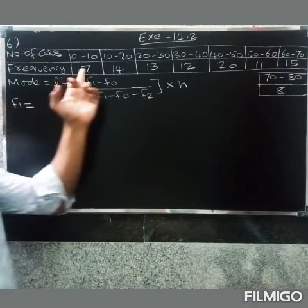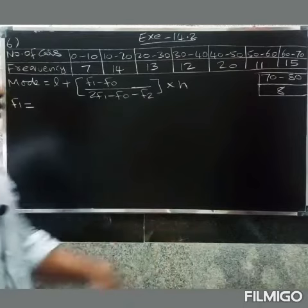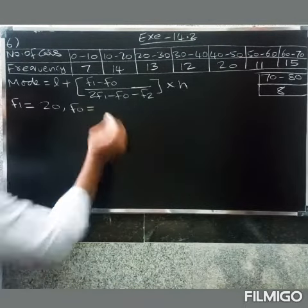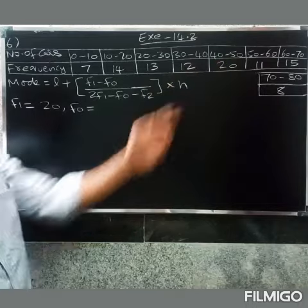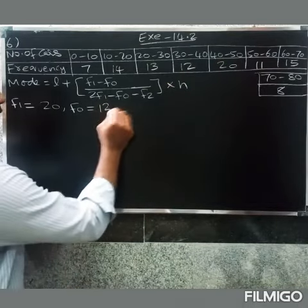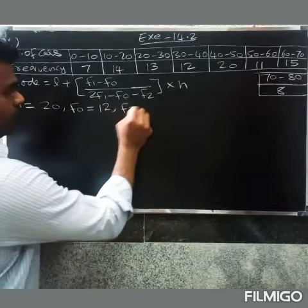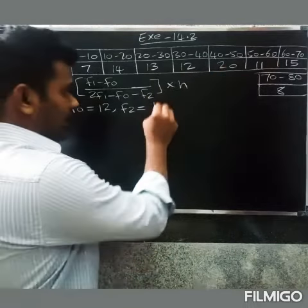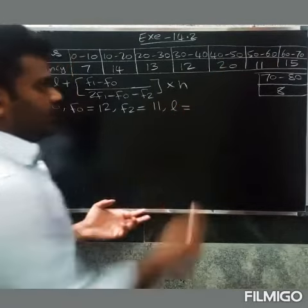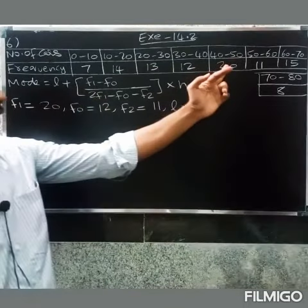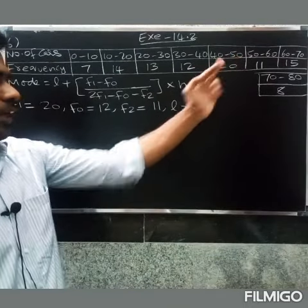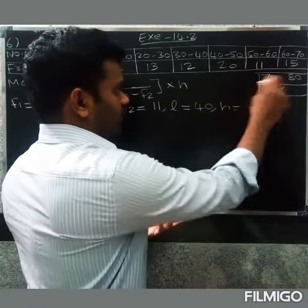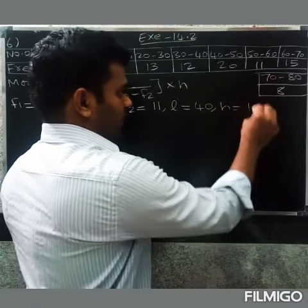F1 is the highest frequency value, which is 20. F0 is the preceding value, which is 12. F2 is the succeeding value, which is 11. L is the lower limit of the modal class, which is 40. H is the class width, which is 10.